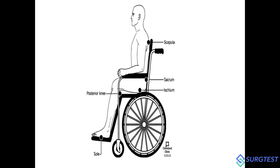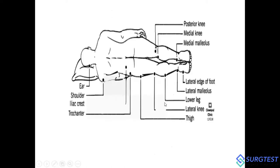When a patient is wheelchair bound, pressure is distributed over the scapula, sacrum, ischium, posterior aspect of the knee, heels, and foot. In lateral decubitus positioning, pressure areas include the ear, shoulder, iliac crest, trochanter region and thigh, and the malleolus — these are the critical pressure points.